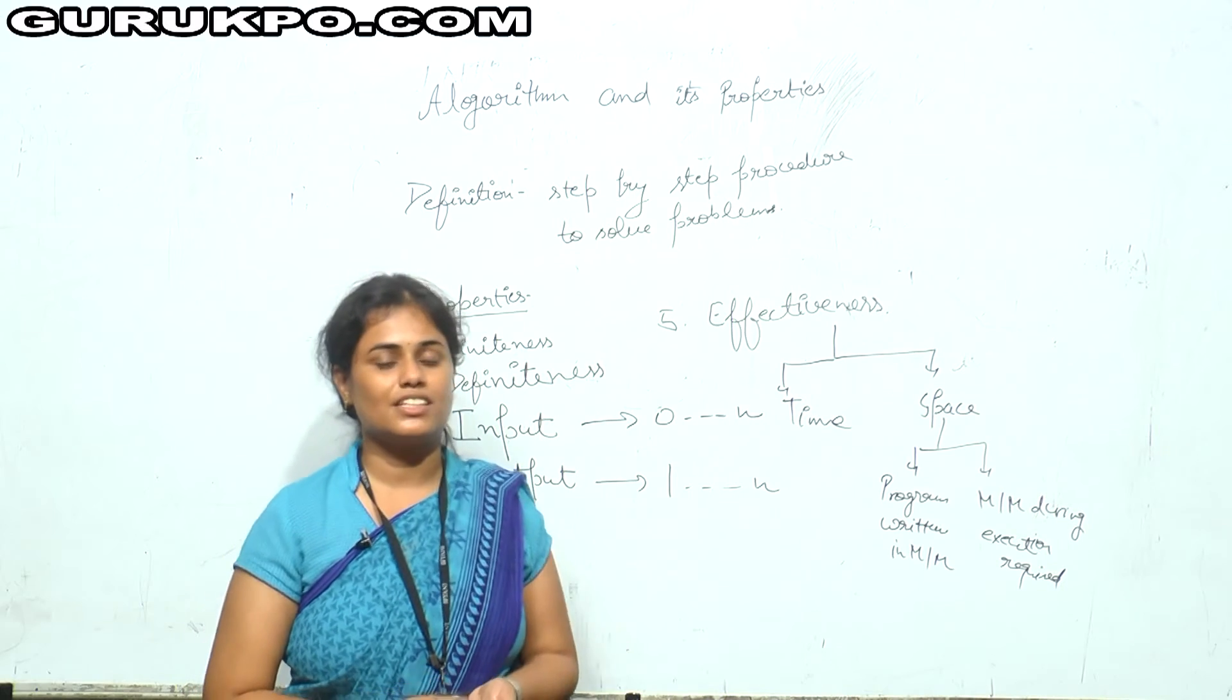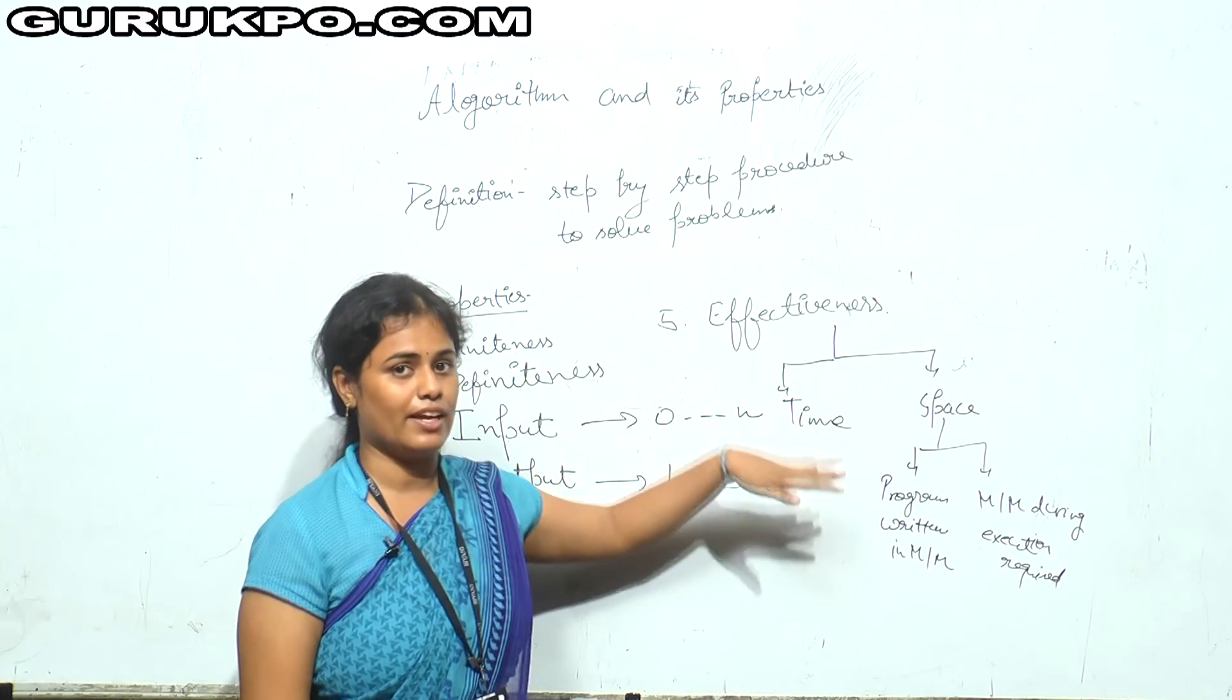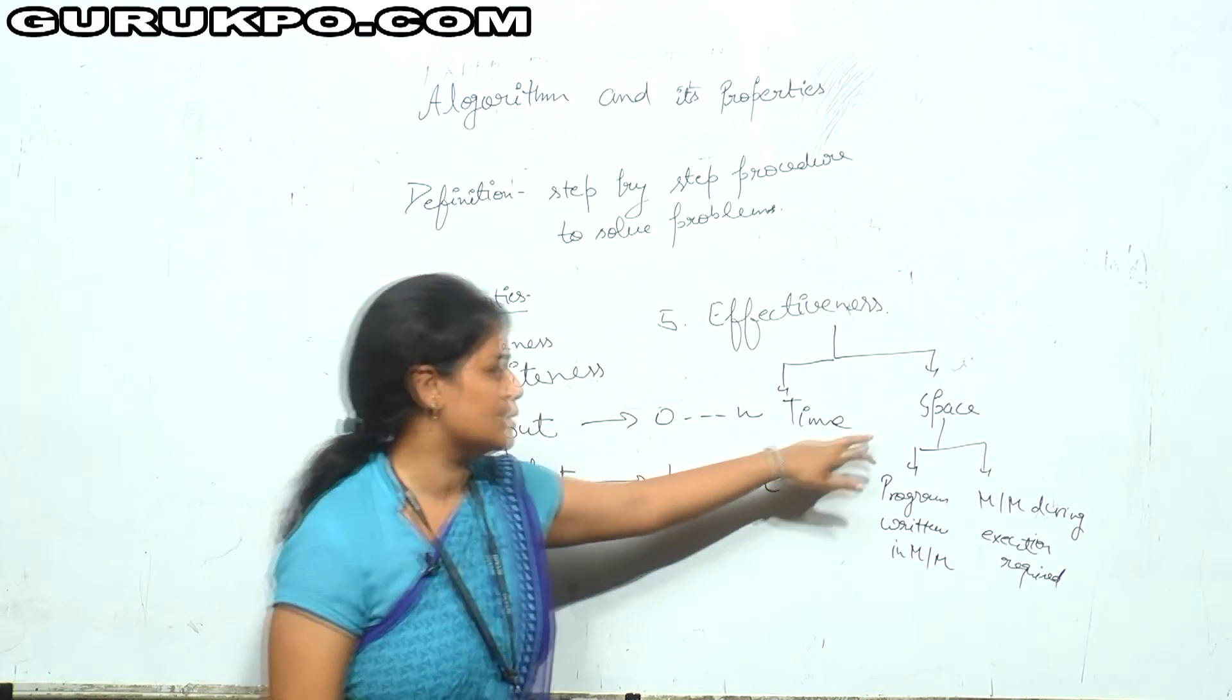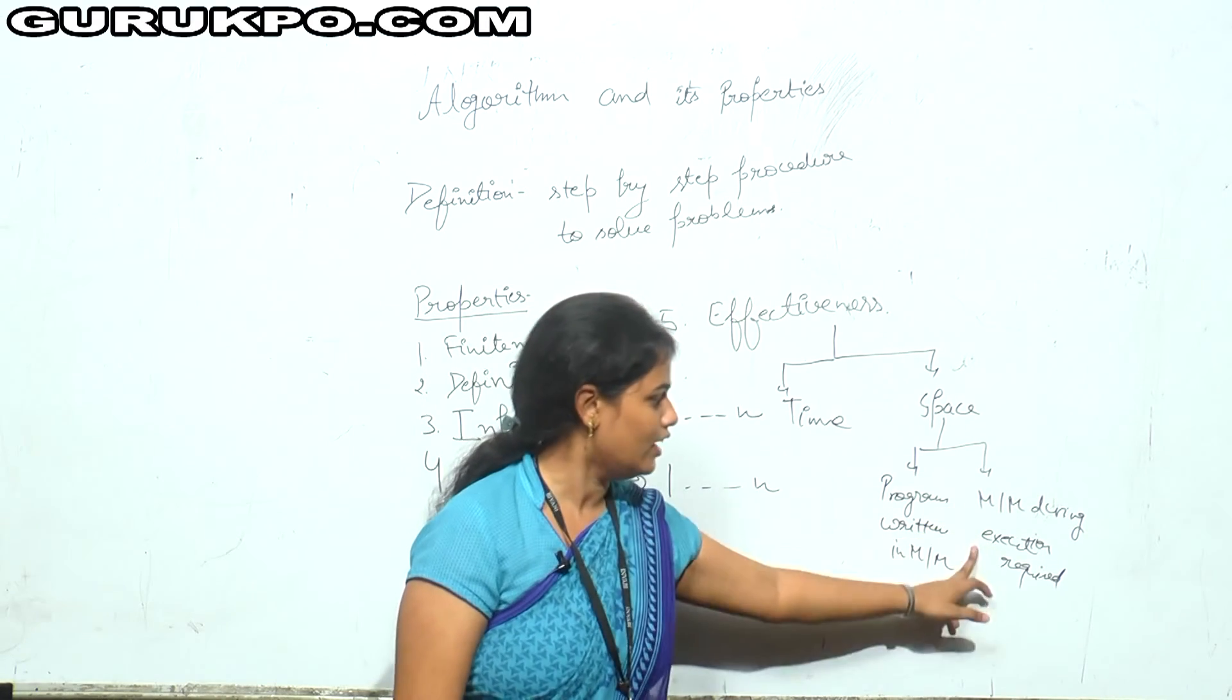So, we can measure the complexity of algorithm in two measures. First is time, time taken by the program to execute and the space, program for written and memory for execution.